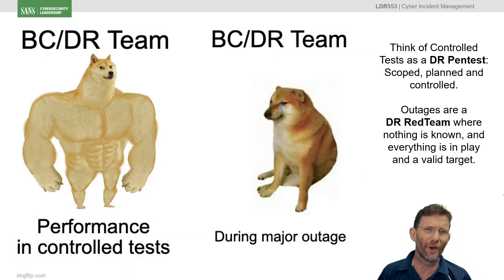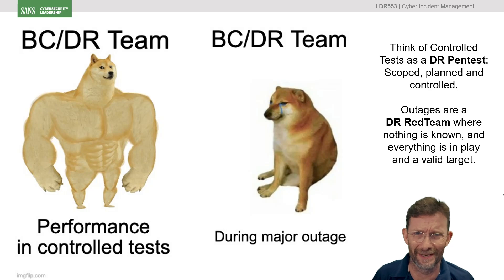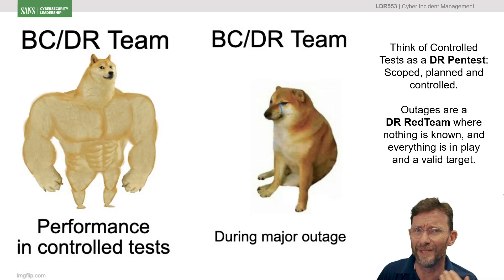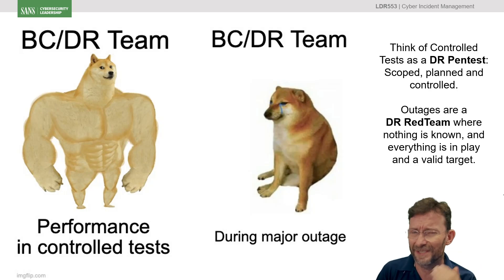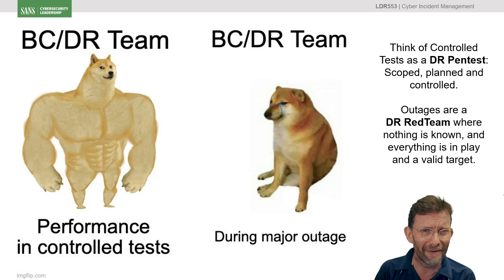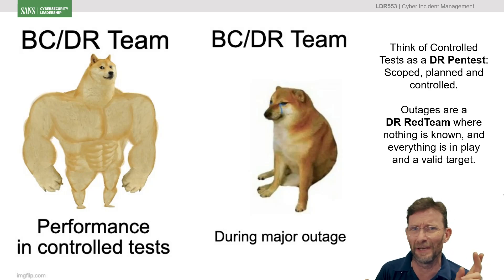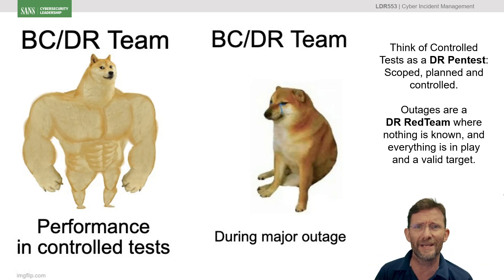So the execs will turn around and go, where's the business continuity team? Where's the disaster recovery team? You've been doing tests — system outages, domain controller outages, data centre outages, link outages. You've done all these tests. Why does this not work?